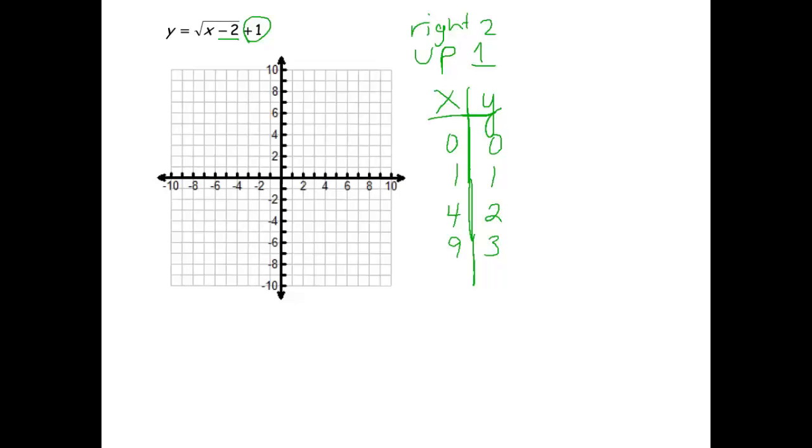So here we go. I'm starting at 0, 0. Let's move this right two. 1, 2, and up one. That point is 2, 1. So that's our new starting point. Let's do it with the next one. Here we go. We're at 1, 1. Let's move right two. 1, 2, up one. Now we're at 3, 2.